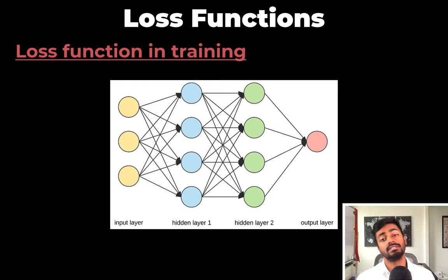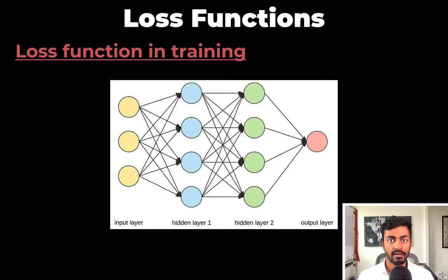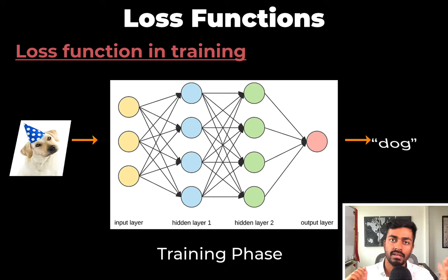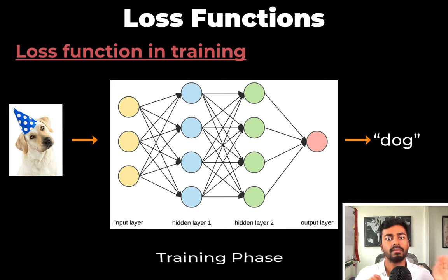This here is a simple feed-forward neural network. We want this network to learn how to take in an image and classify it either as a dog or not dog. And this learning is done by the training phase on thousands of image label pairs.